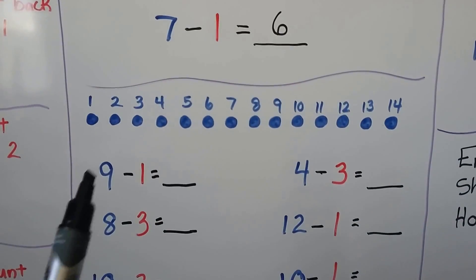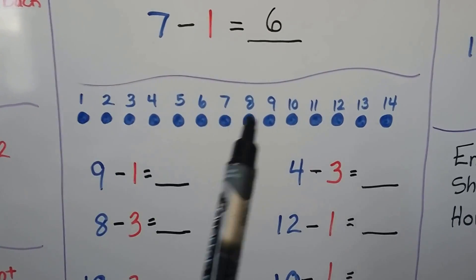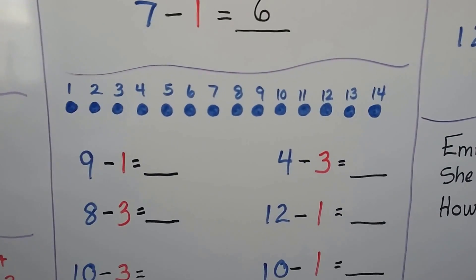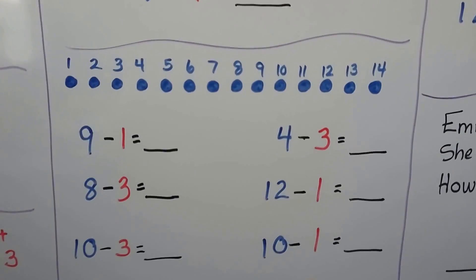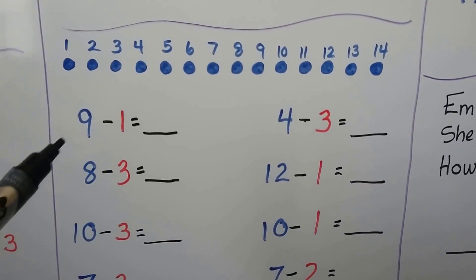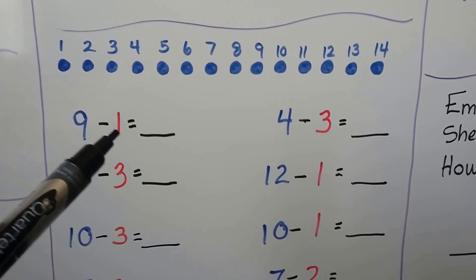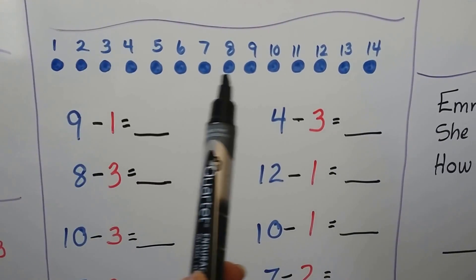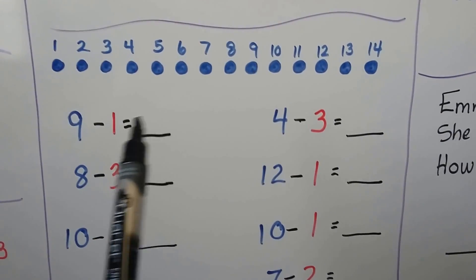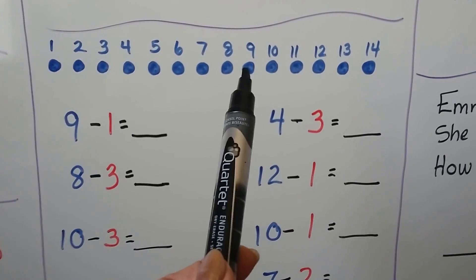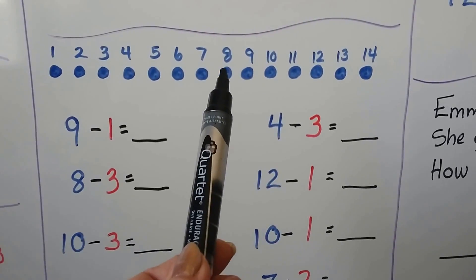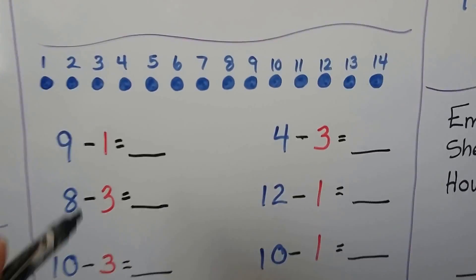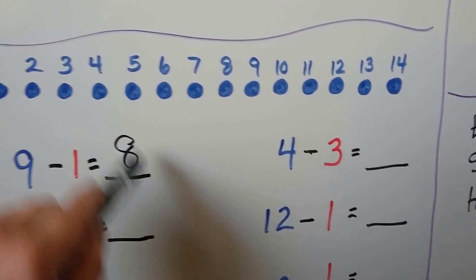Here we have a lot of counters — we have 14 counters. We can use these to help us do subtraction facts. 9 minus 1. We start at the 9. We find the 9 — there it is — and we're going to count back 1. Here's the 9. We count back 1. It brings us to 8. 9 minus 1 is equal to 8.